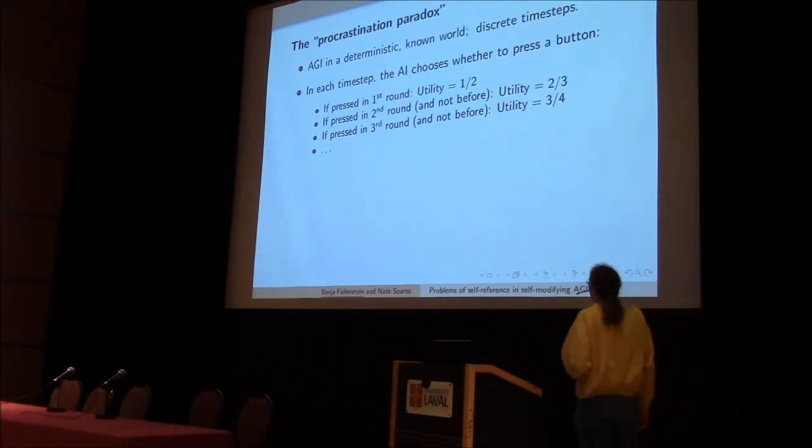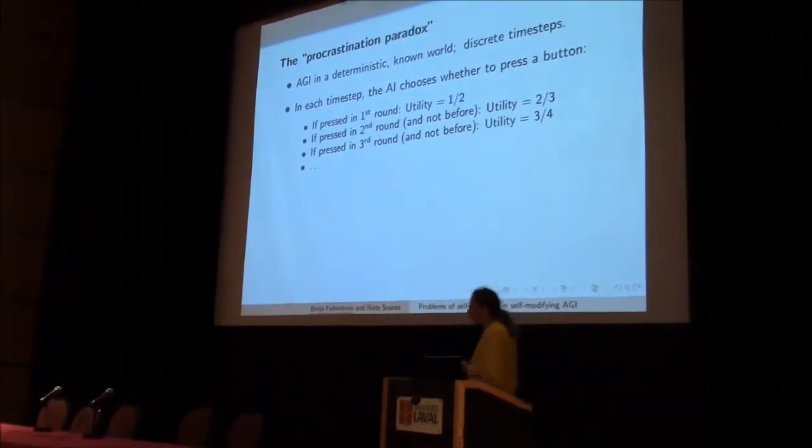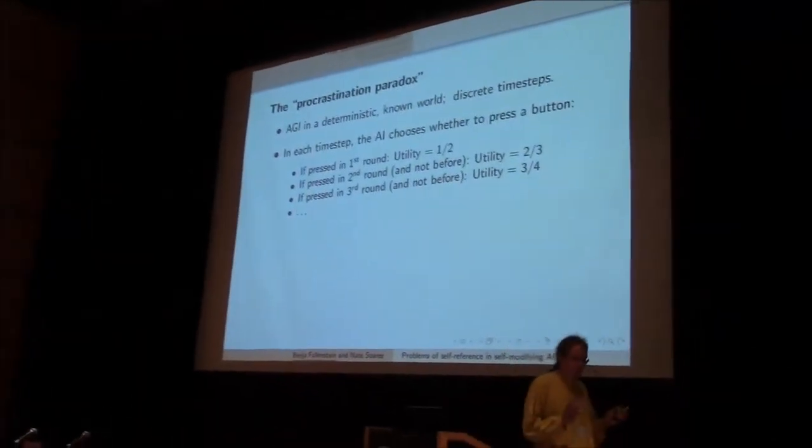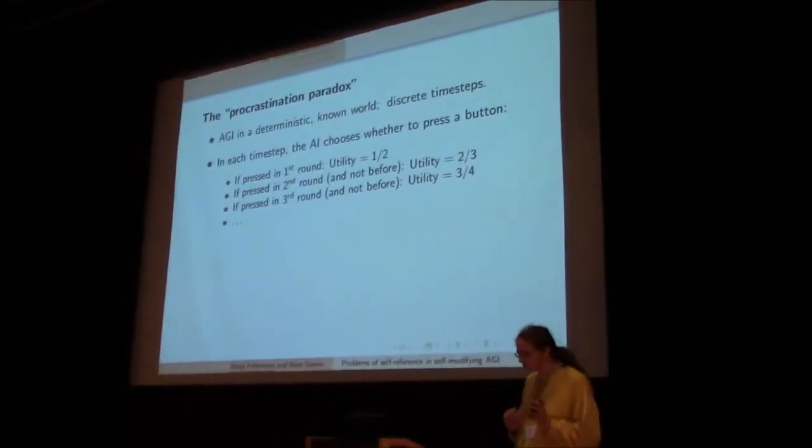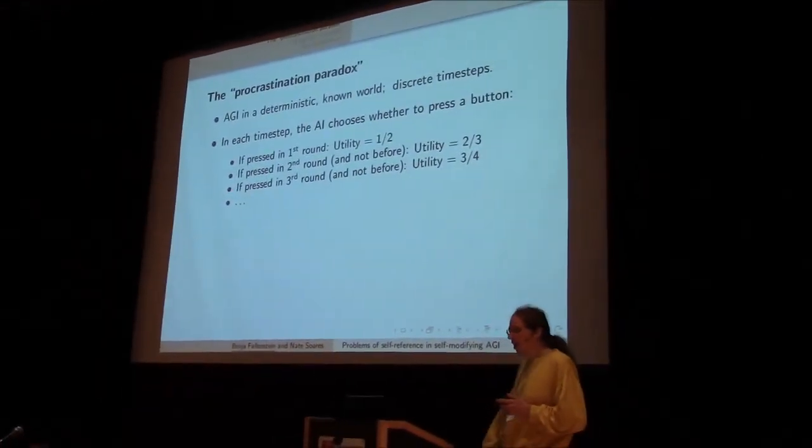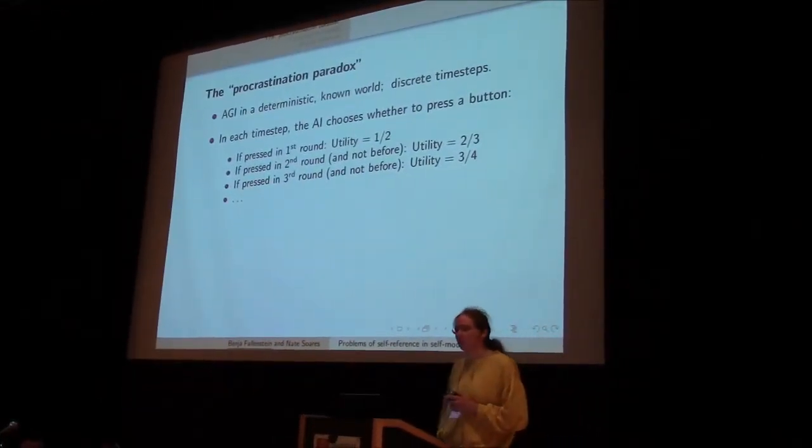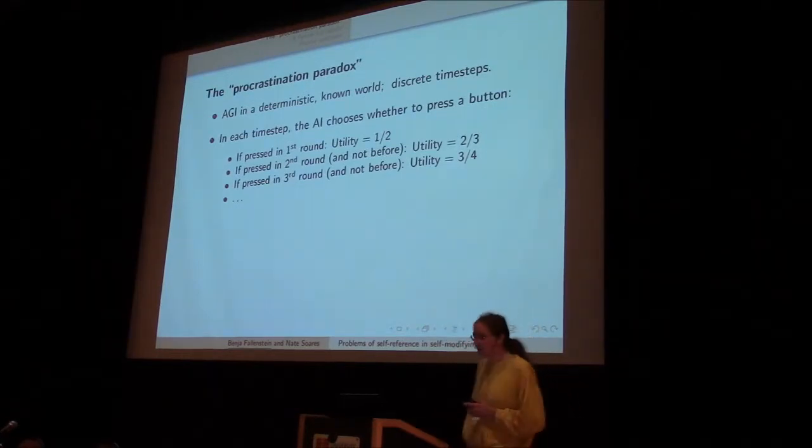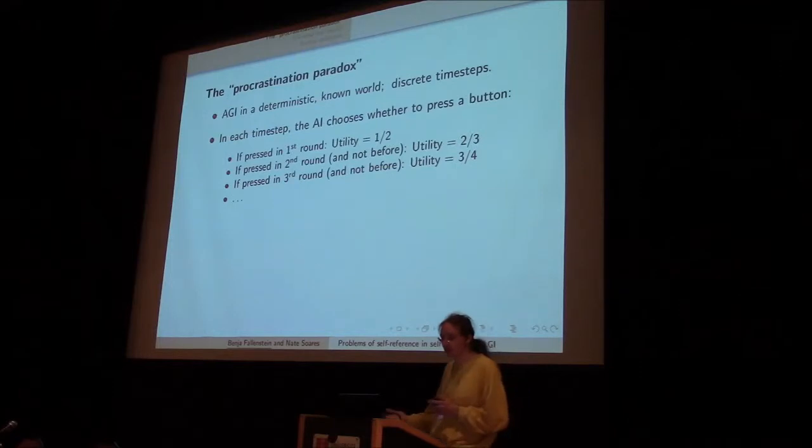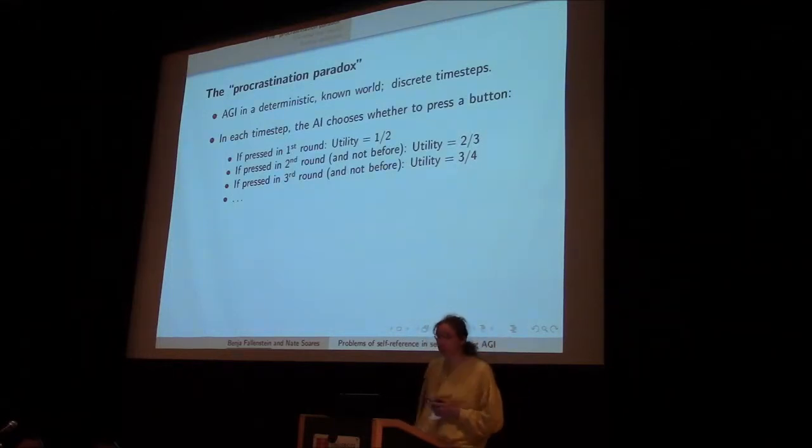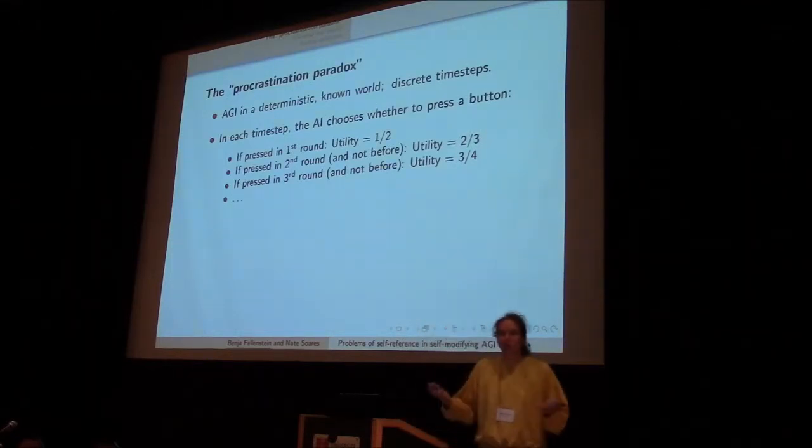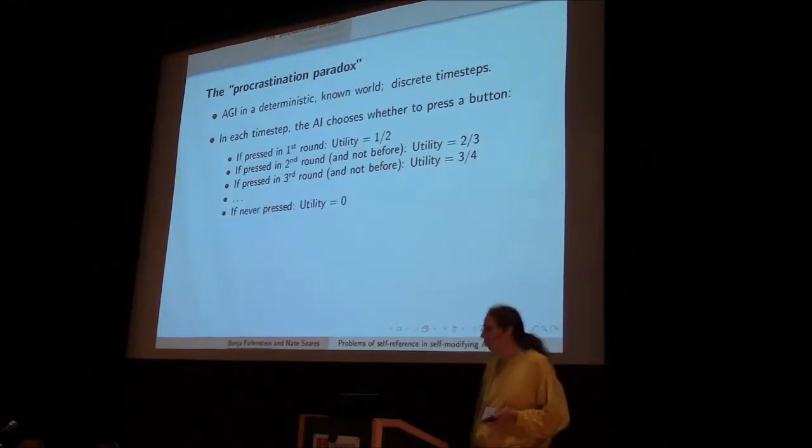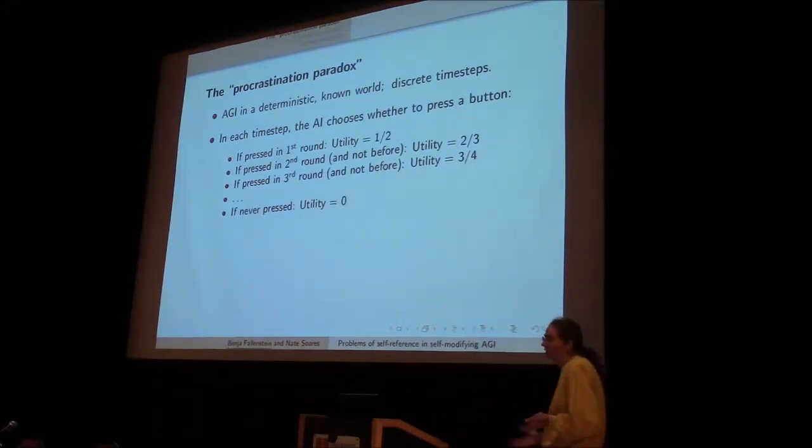So for the intuitive problem called procrastination paradox, imagine an AI in a deterministic, well-known world with discrete time steps. In each time step, the AI chooses whether to press a certain button. If it presses in the first round, it gets utility one-half. If it presses the second round for the first time, it gets two-thirds. If it presses the third round, it gets three-fourths. And so the later the better. But if it never presses the button, it doesn't get anything.